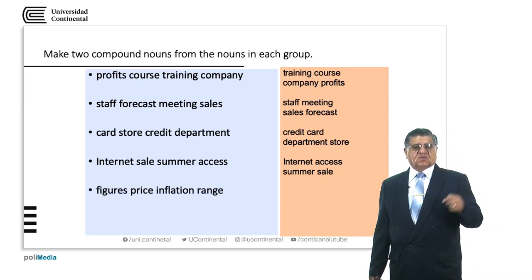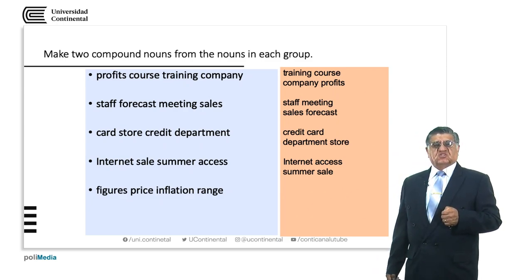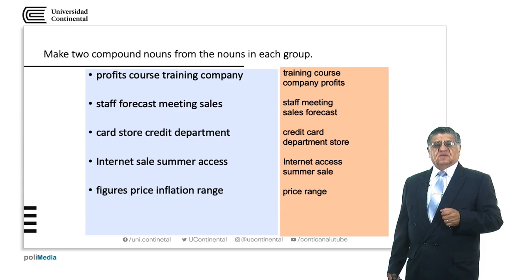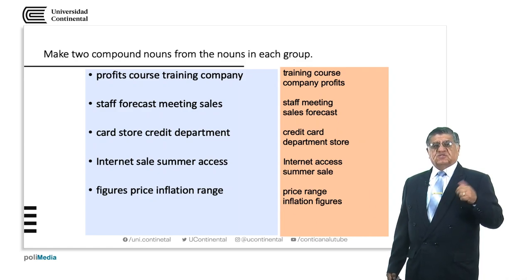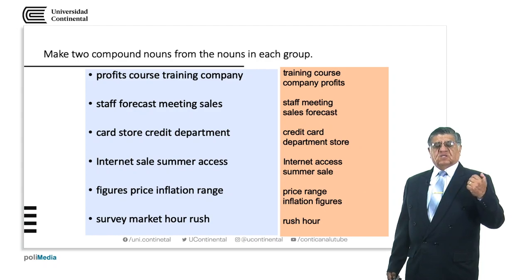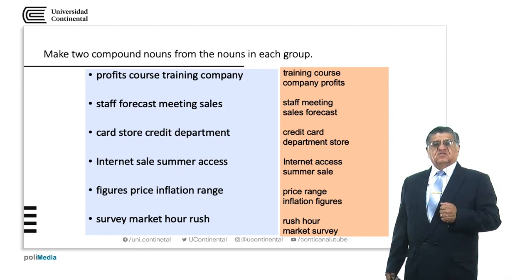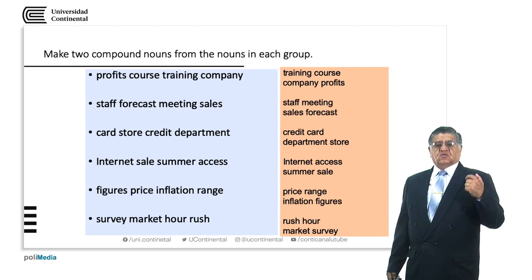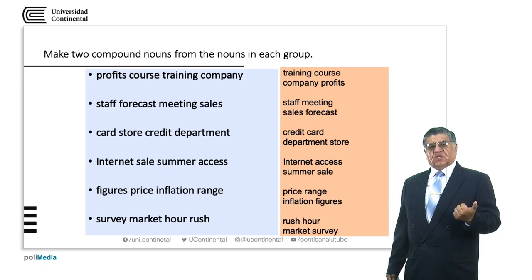Figures, price, inflation, range: 'price range' is the range of prices, and 'inflation figures' — the numbers about inflation. Survey, market, hour, rush: 'rush hour' is the hour that is very hectic, with lots of things to do and lots of people doing things. 'Market survey' is a survey on the market to learn how the market is working — whether it is improving or not.